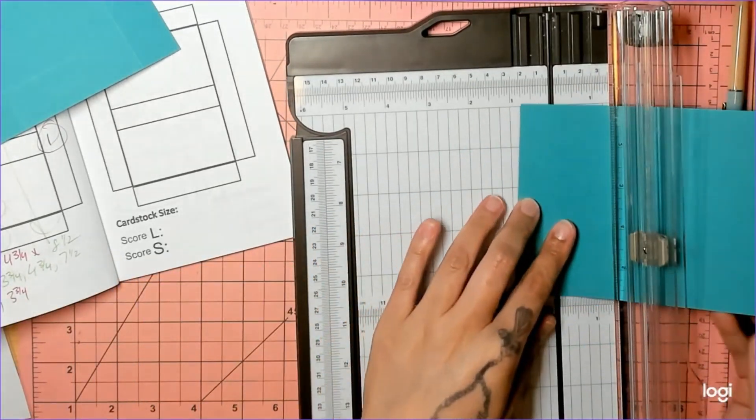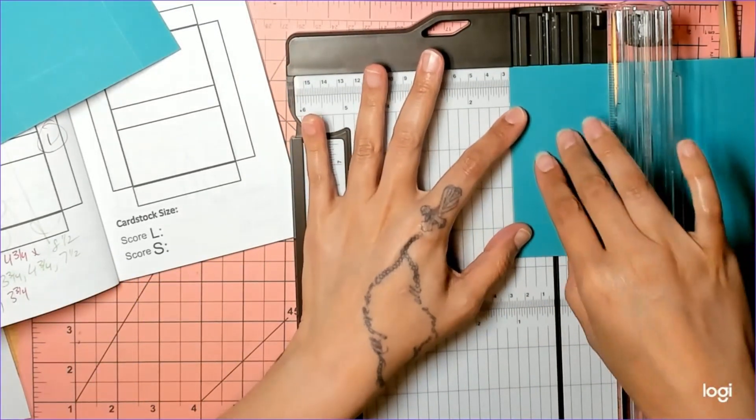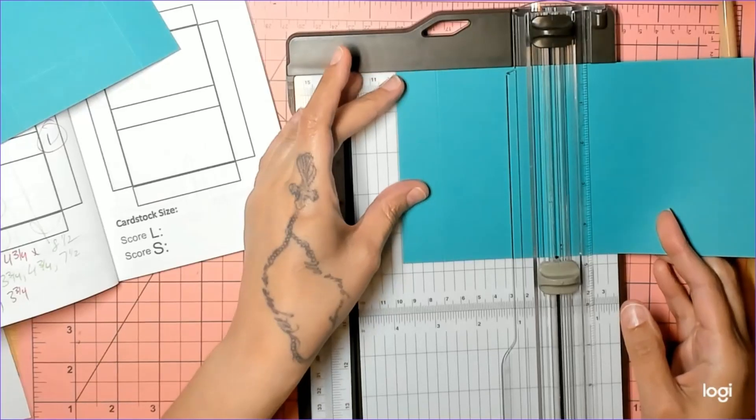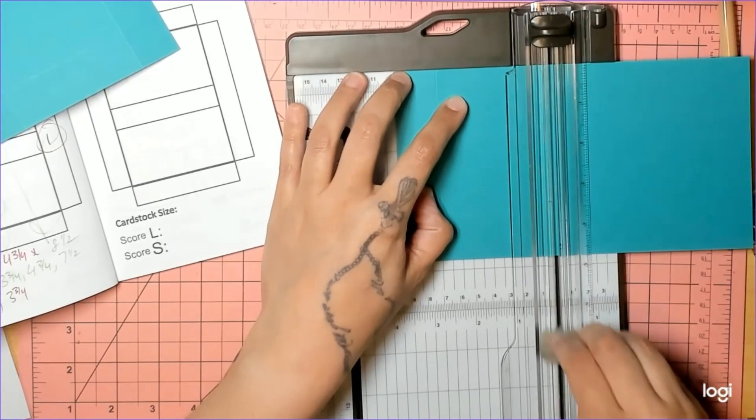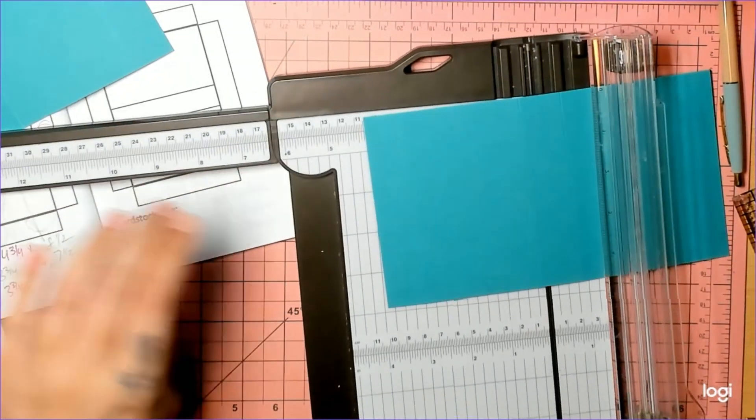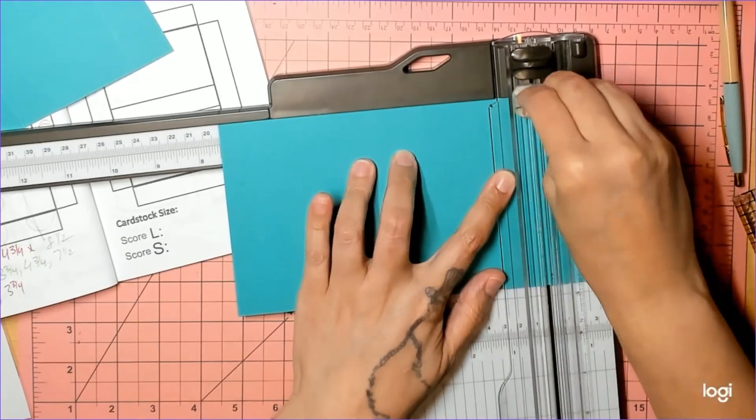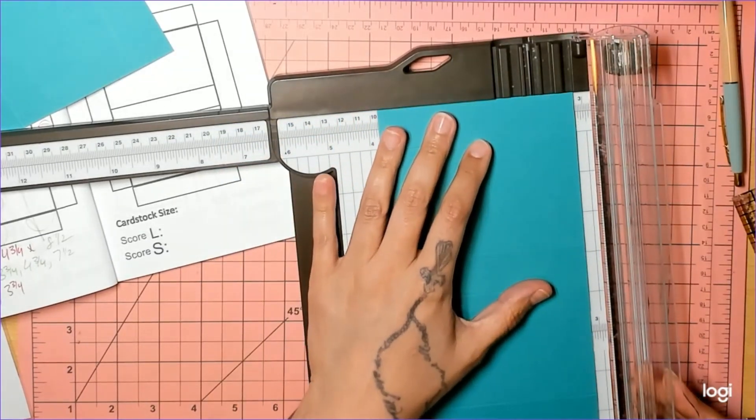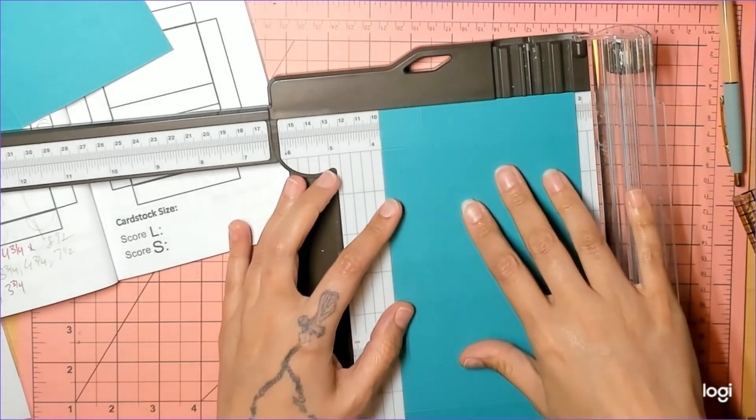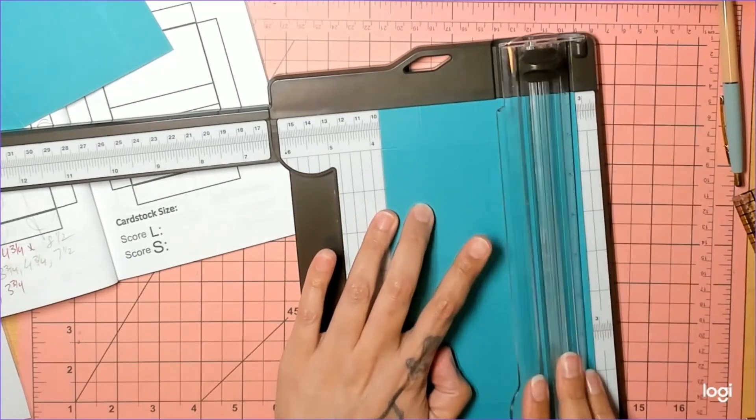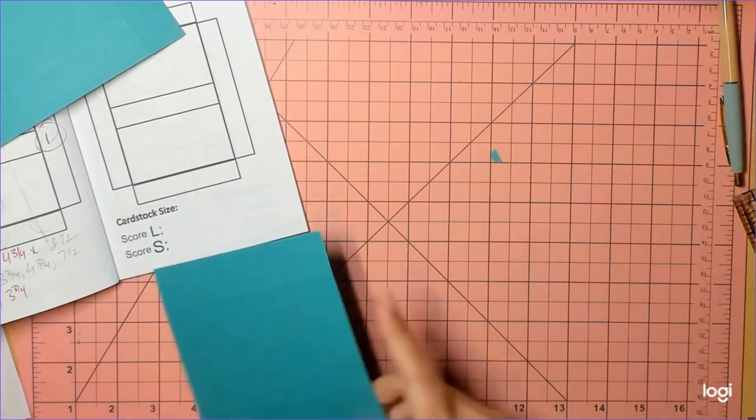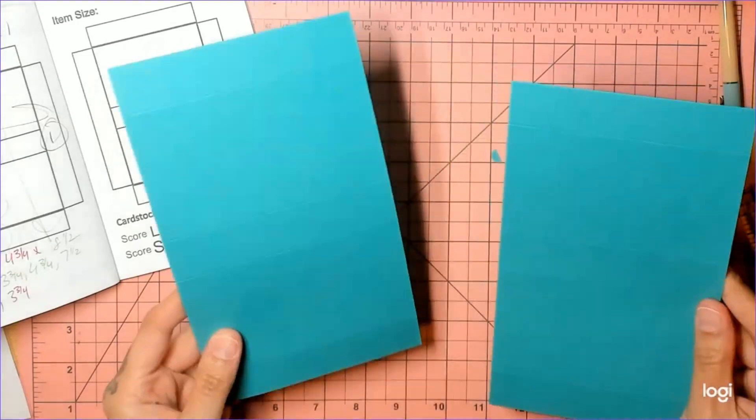If you did the measurements following the book, you would do one inch, three and three-fourths, four and three-fourths, and seven and a half. We'll do it that way just to show you the difference. So we're going to follow the book: on the long side one inch, three and three-fourths, four and three-fourths, and seven and a half. Then on the short side, one inch and three and three-fourths. Either way you do it, they come out exactly the same.